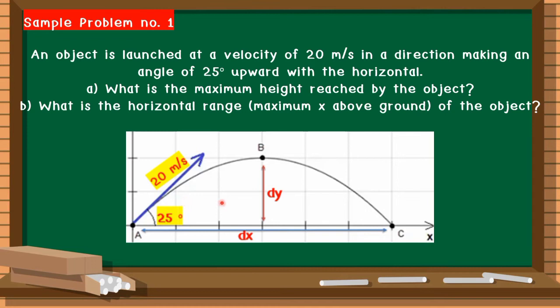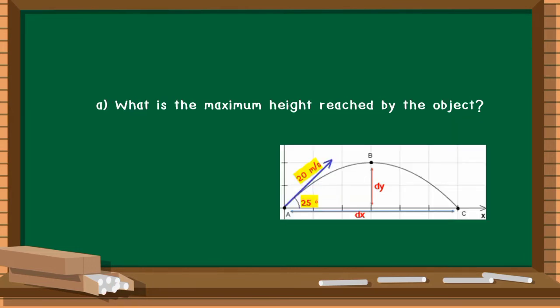Since we need to find the maximum height, we need to find dy, and for the horizontal range we need dx. Let us first identify the given values: the initial velocity Vi is 20 meters per second, the angle is 25 degrees, and gravity is 9.8 meters per second squared.